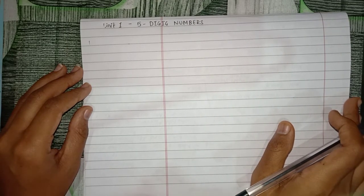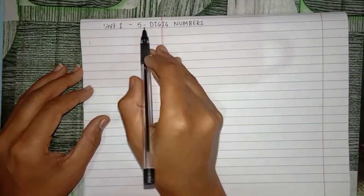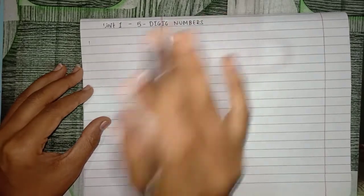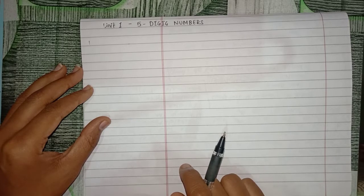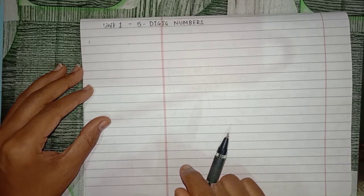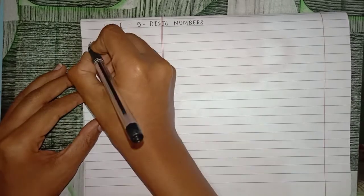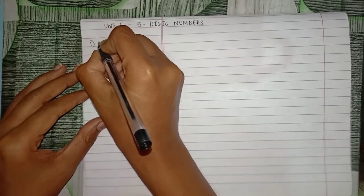Let's begin with Exercise 1.1 of Unit 1, five-digit numbers. First question: Insert commas at appropriate places in the following numbers and write in words. First we have 32894.